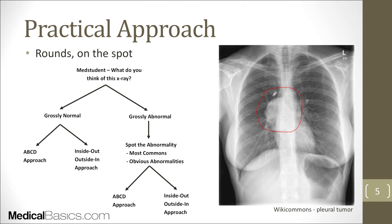For these situations, especially if there's something very obvious, what we want to do is go in a more practical stepwise manner. When they ask what you think of this x-ray, first ask yourself: is it grossly normal, or is it grossly abnormal? In this situation it's grossly abnormal — so first thing off the bat, you say there's a very large tumor, either in the pleural space or somewhere in the mediastinum. After that, you start going into the ABCDs or the inside-out approach.